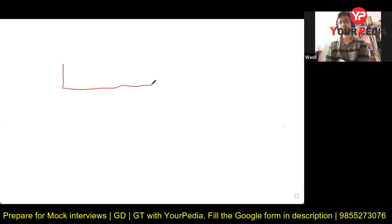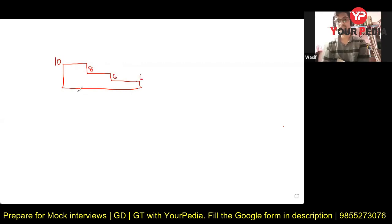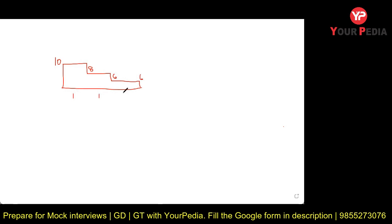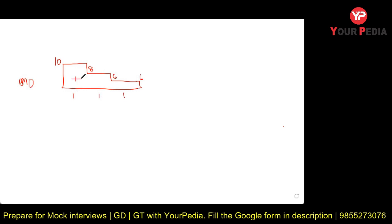I'm going to give you an example. Can you see the screen? Yes sir. Suppose this is a bending moment diagram. This value is 10 here, then it is 8, and then it is 6 here. The distances are one meter, one meter, and one meter. This is your bending moment diagram, and suppose this is positive — can you draw its loading diagram?